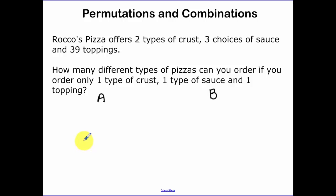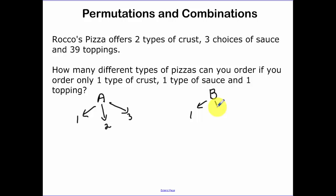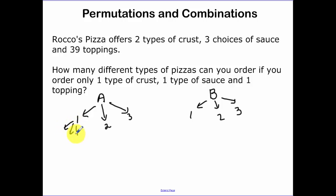There are three types of sauce. Coming from crust A, we have sauce type 1, sauce type 2, sauce type 3, and same thing with crust B. Now for the 39 toppings — I can only pick one topping, but with crust A and sauce 1, I now have 39 different possibilities of toppings. That's a lot of math to do.